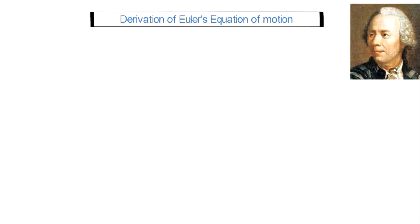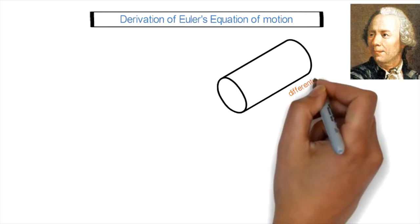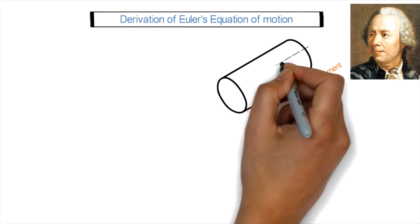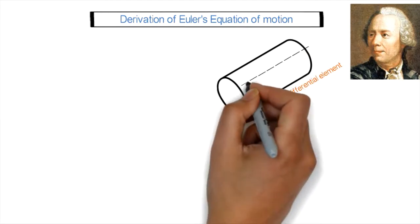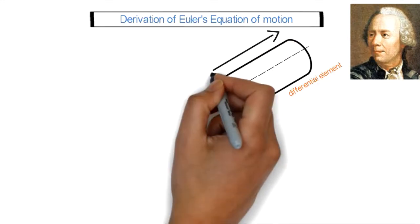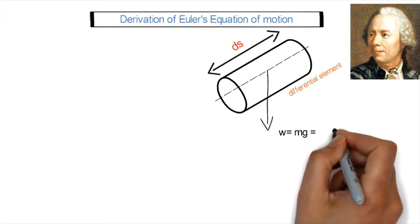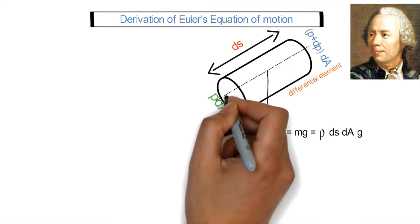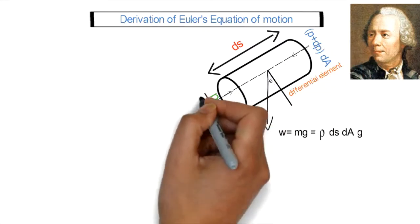Let's derive Euler's equation of motion. First of all, let's imagine we have a streamline, and we will take a tiny differential element of this streamline. This differential element of a fluid has length ds. Because we are talking about flow dynamics, that means there is motion in the flow and the flow is not stationary at all.